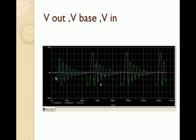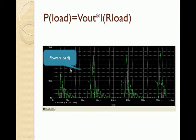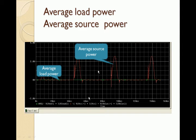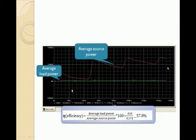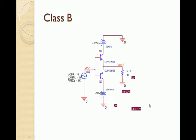We will observe V out, V base, and V in for the circuit. The power load is V in multiplied by V output into the load resistance. We calculate the average load power and the average source power in order to determine the efficiency of the amplifier.